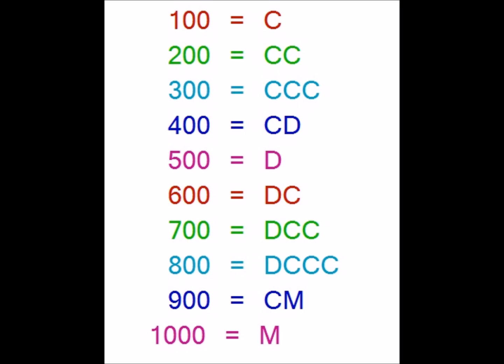In the case of 400, like with 40 and 4, we use the next symbol — in this case D, which indicates 500 — and we subtract a hundred from 500 to obtain 400. So we prepend C to D, making CD, which indicates 400. For 500 we have the basic symbol D.